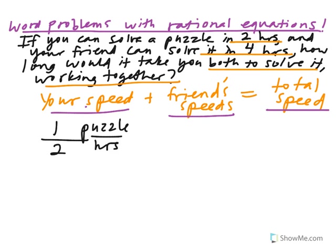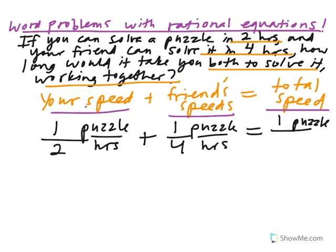Alright, now what's your friend's speed? Your friend's speed is one puzzle every four hours. Okay, and then the total speed, this is where the variable comes into play. Because together you're going to solve one puzzle, but you don't know how long it's going to take. So if we write an expression for the total speed, we're just going to call that x.